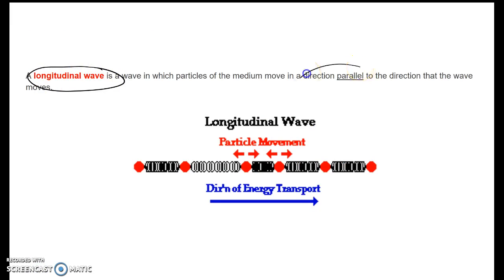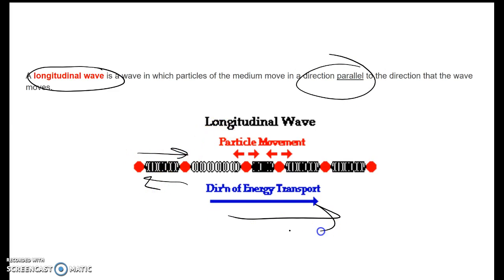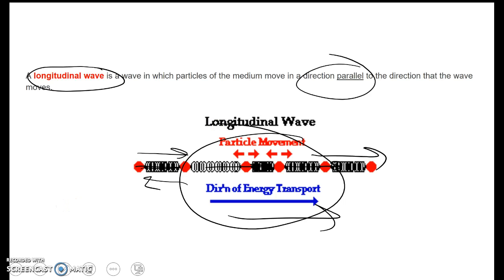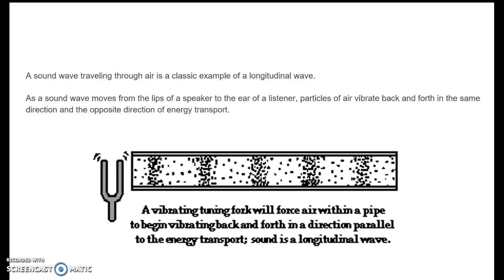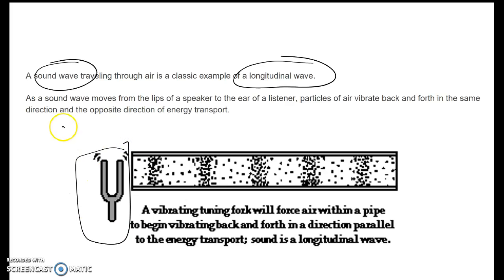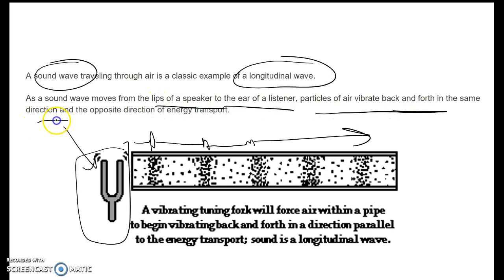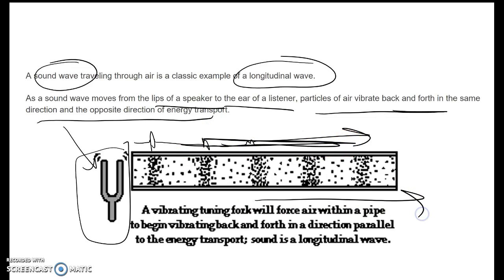In a longitudinal wave, the particles and the energy both move in the same direction — parallel. The particles move back and forth while the energy also goes that same way. The particles get closer together and farther apart, transferring energy from one particle to another in the same direction. Longitudinal is parallel, not perpendicular. The best example of a longitudinal wave is sound. If we take a tuning fork and hit it, the sound waves cause air to spread out, come together, spread out, come together — transferring sound away from the tuning fork. The lips of a speaker vibrate parallel to the direction of energy transport, which makes sound longitudinal.